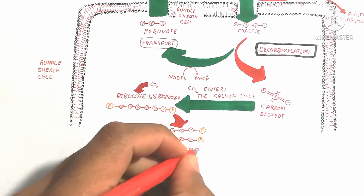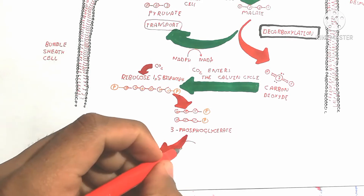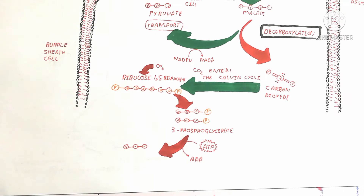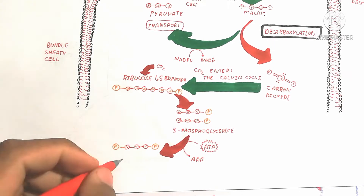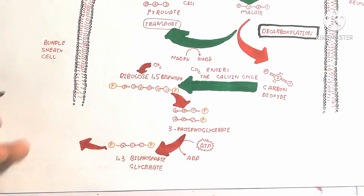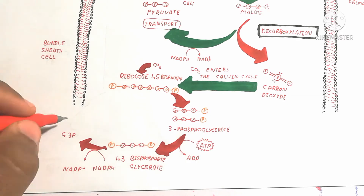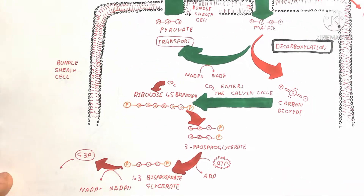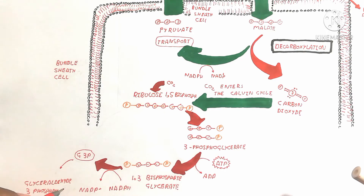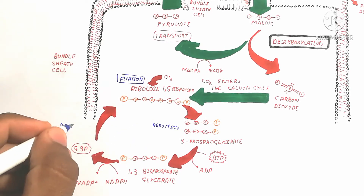Carbon dioxide is not directly used during daytime because photorespiration prevention is active in these plants. Carbon dioxide is stored in the form of malic acid, and after it is converted back to CO₂ in the bundle sheath cell, it enters the Calvin cycle. RuBP accepts CO₂ to form 3-phosphoglycerate, which is converted to 1,3-bisphosphoglycerate using ATP, and then NADPH reduces it to glyceraldehyde-3-phosphate.